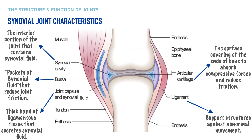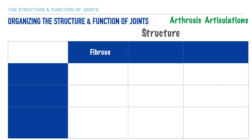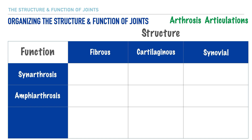Let's utilize a chart to help us better understand the structure and function of our joints. Two alternate terms you may hear for joints are arthrosis and articulations — both synonymous with the term joint. In our chart, representing joint structure we have fibrous, cartilaginous, and synovial; and representing joint function we have synarthrosis, amphiarthrosis, and diarthrosis.